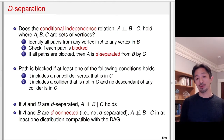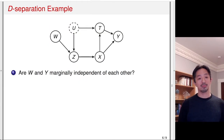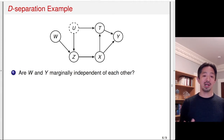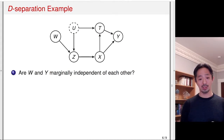D-separation is very useful because once you write down the graph, you can figure out whether variables are independent or dependent. So here's an example. Let's ask: are W and Y marginally independent of each other? That is, are they independent without conditioning on any variable? To answer this, we enumerate all paths between W and Y, both causal and non-causal, and see if they are blocked. In this case there is no conditioning variable, so we just check whether anything is blocked without conditioning.